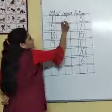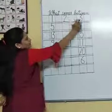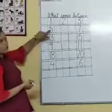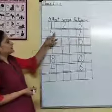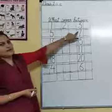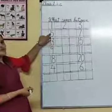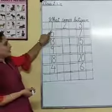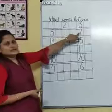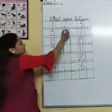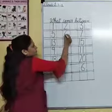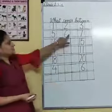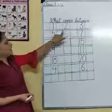This is the between number of 1 and 3. Next is number 5, and this one is number 7. What is the between number of 5 and 7? Start from 5: 5, 6, and 7. So what will we write here? Number 6, because 6 is the between number of 5 and 7.